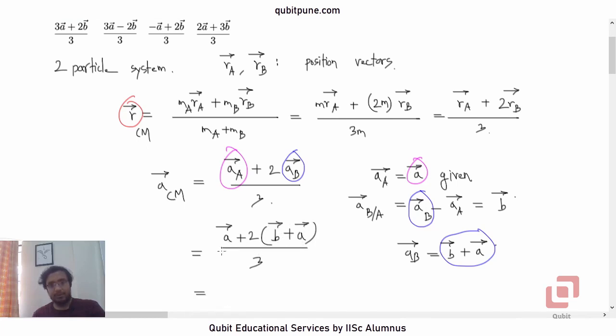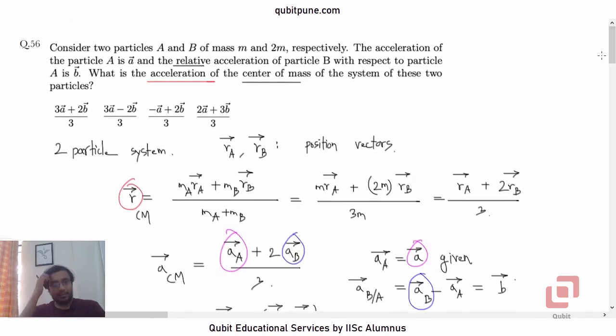Last step, we will make that 2 a bar plus a bar, 3 a bar plus 2 b bar upon 3. So it will be 3 a bar plus 2 b bar upon 3, that is option a.